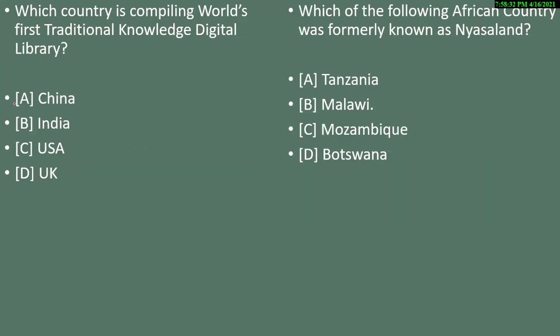Question 17: which country is compiling the world's first traditional knowledge digital library? Options are China, India, USA, or UK. The correct answer is India.